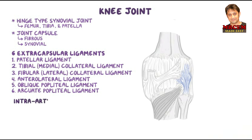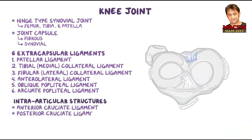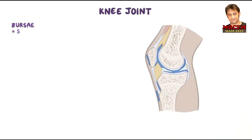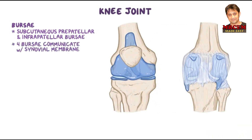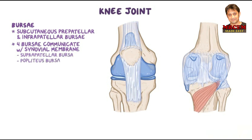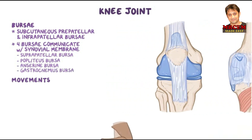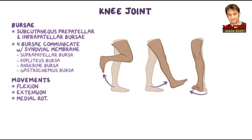The knee also has intra-articular structures including the anterior cruciate ligament, posterior cruciate ligament, and the medial and lateral menisci. The important bursae around the knee are the subcutaneous prepatellar and infrapatellar bursae, and the four bursae that communicate with the synovial cavity: the suprapatellar bursa, the popliteus bursa, the anserine bursa, and the gastrocnemius bursa. Knee joint movements include flexion, extension, medial rotation, and lateral rotation.